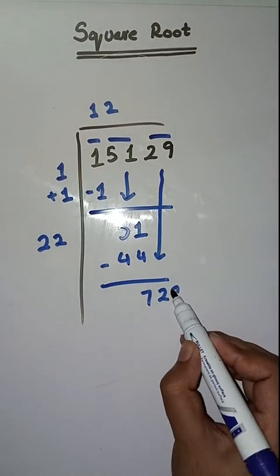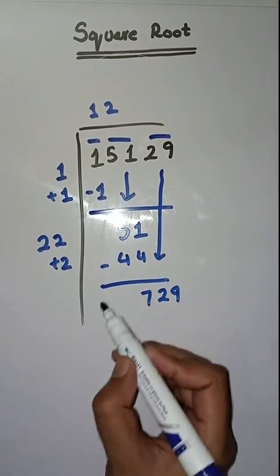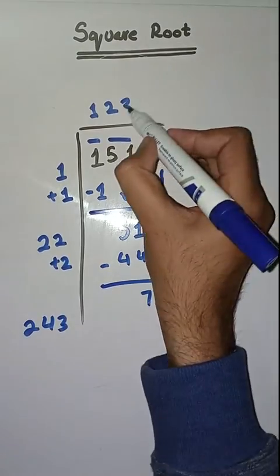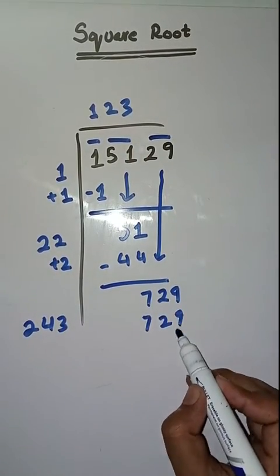And next pair is 29. Isko hum neeche lehenge. Yaha pe hum karenge 22 plus 2 which is equal to 24. Now we will take a number 3. 243 times 3 is 729.